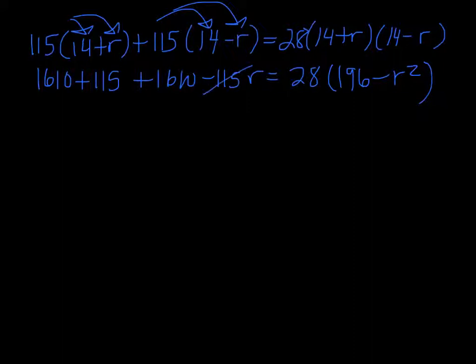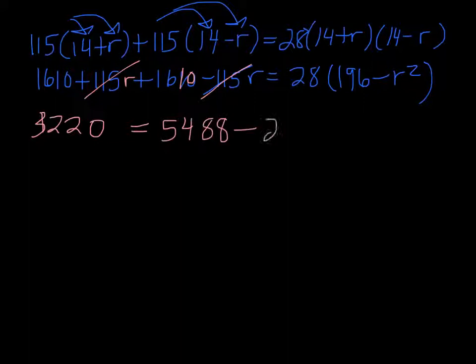The 115r's cancel out, and we're left with 1610 plus 1610, so I can double that and I get 3220. This equals 28 times 196, which is 5488 minus 28r squared.